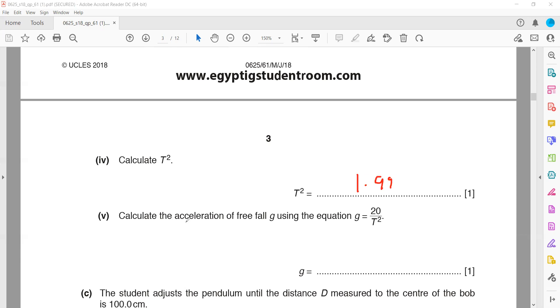Calculate the acceleration of free fall using the equation g = 20 divided by T². So 20 divided by 1.99 gives us the value for acceleration due to gravity, which is 10.05 newtons per kilogram, or meters per second squared.